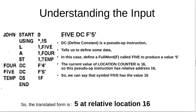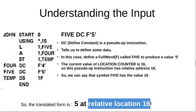The next instruction is similarly '5 DC F'5''. DC again means define constant — a pseudo-op instruction to define some data. We define a full word called FIVE with the name FIVE and it will produce a value 5. The current value of the location counter is 16, so this pseudo-op instruction has relative address 16. The translation is: the value FIVE will be stored at relative location 16.